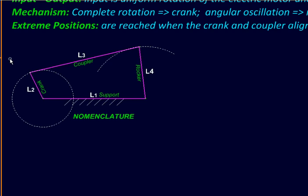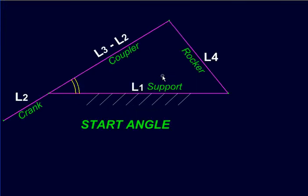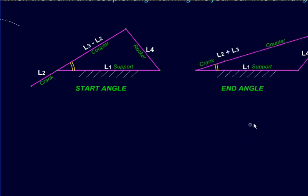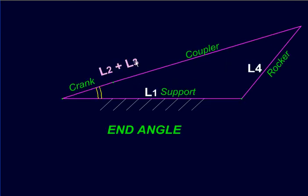The extreme positions are given by these two triangles. The start angle here is defined by this configuration where the coupler overlaps the crank. So this side of the triangle is L3 minus L2, while the end angle is defined by this configuration where the coupler and crank align themselves one next to the other. So this side of the triangle becomes L2 plus L3.